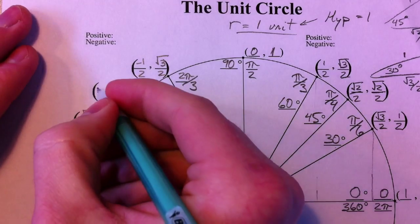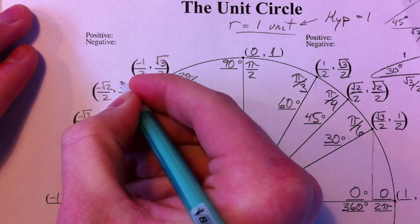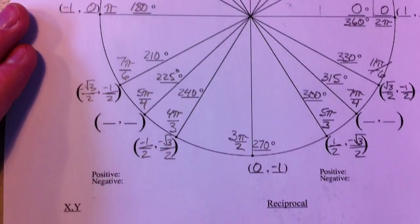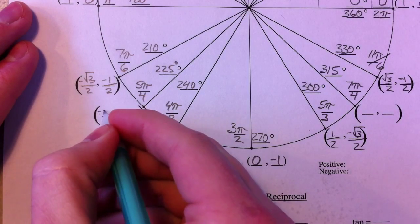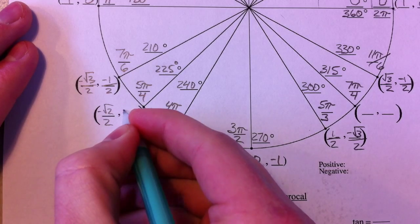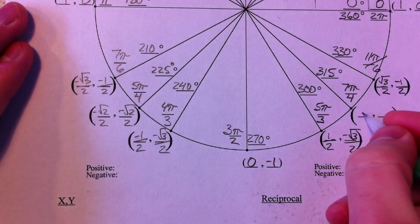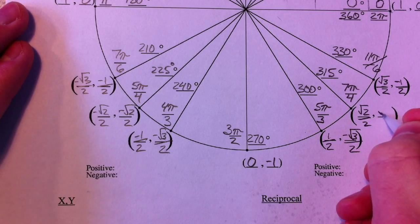And so the x's change signs, root 2 over 2. The y's are the same. Over here, both of them are negative because you've gone to the left and you've gone down. So negative x's and negative y's. And here we have positive x's and negative y's.